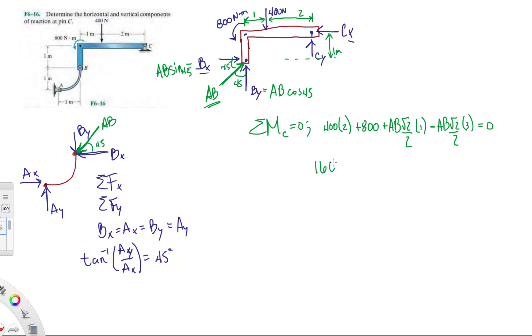So we have 1600. If you bring it over to this side, we're going to get 2 AB square root of 2 over 2, which means that AB equals 1600 divided by square root of 2, 1131.4 newtons. I did the math ahead of time, so this comes out to 1131.4 roughly. So we already have one big unknown.